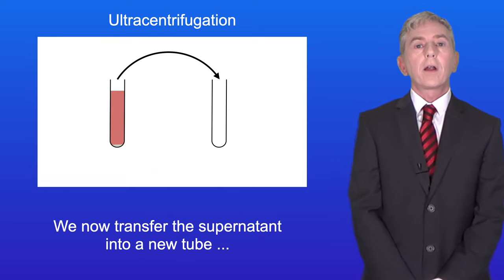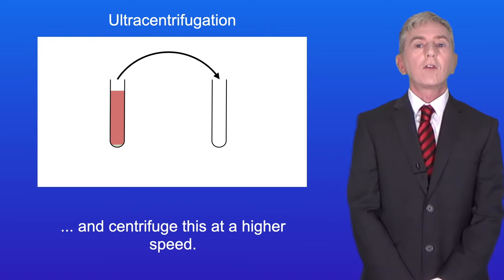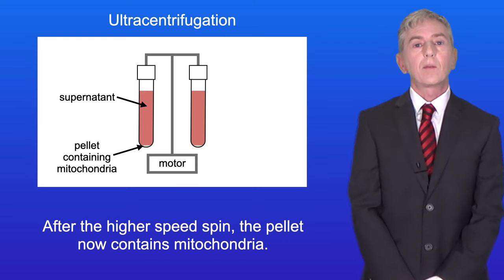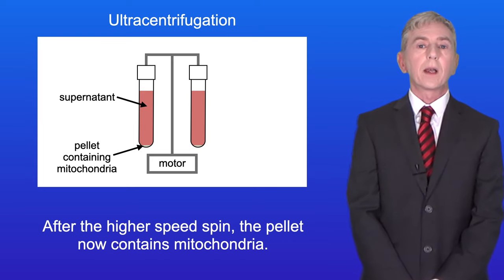We now transfer the supernatant into a new tube and centrifuge this at a higher speed. After the higher speed spin the pellet now contains mitochondria.